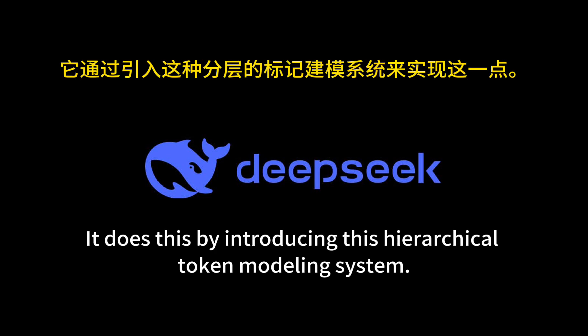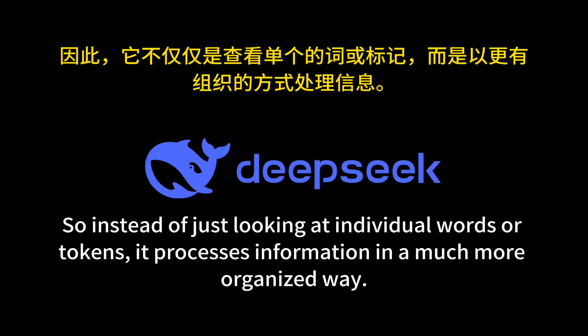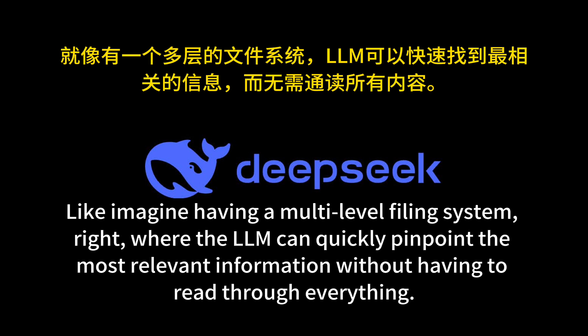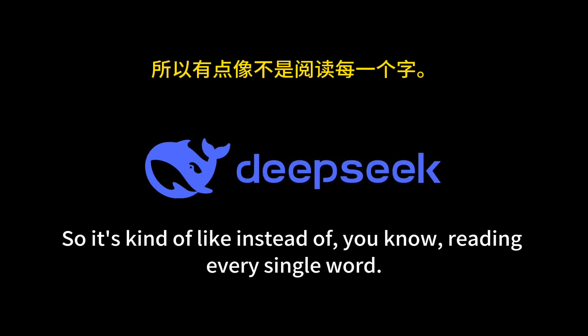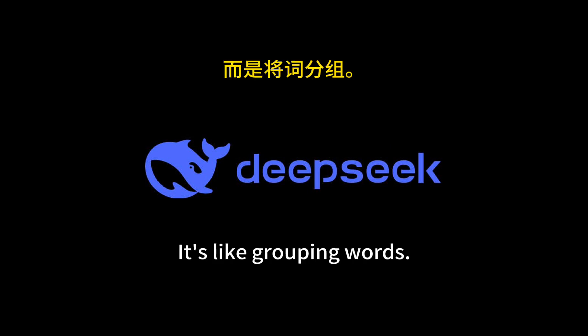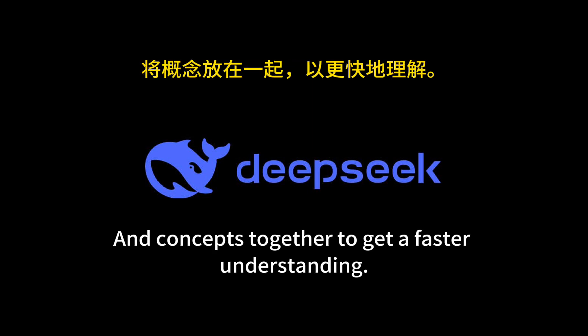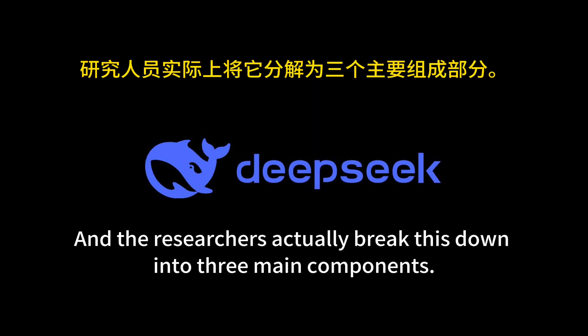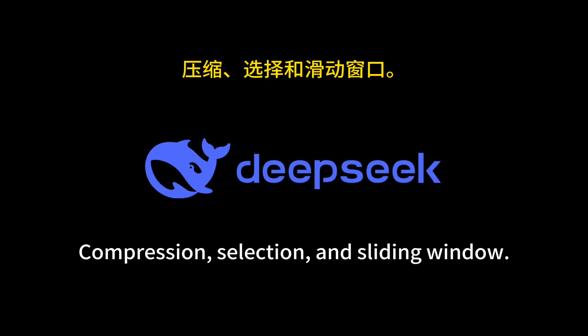NSA does this by introducing a hierarchical token modeling system. Instead of just looking at individual words or tokens, it processes information in a much more organized way — like a multi-level filing system where the LLM can quickly pinpoint the most relevant information without having to read through everything. It's like grouping words and concepts together to get a faster understanding. The researchers break this down into three main components: compression, selection, and sliding window.